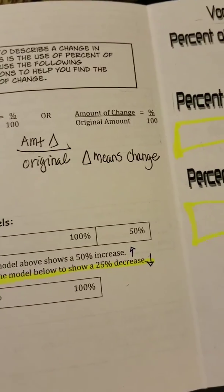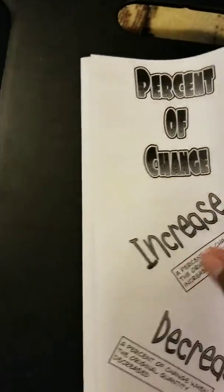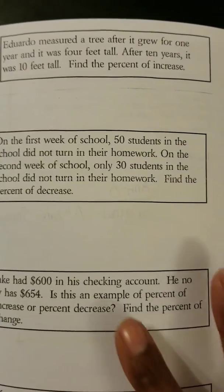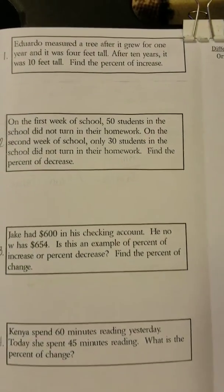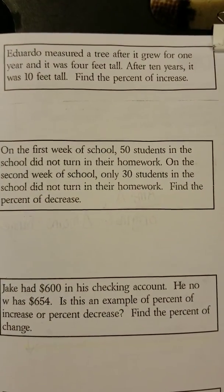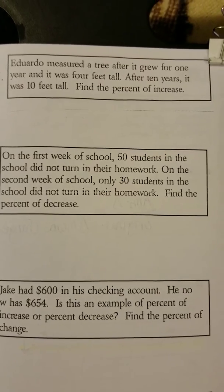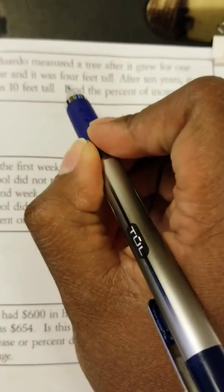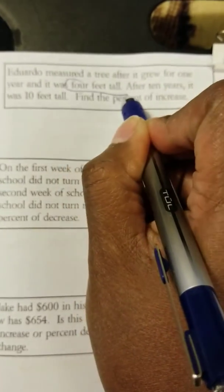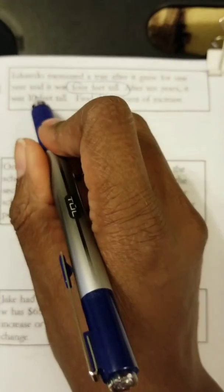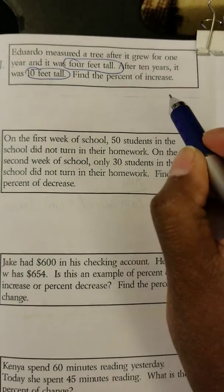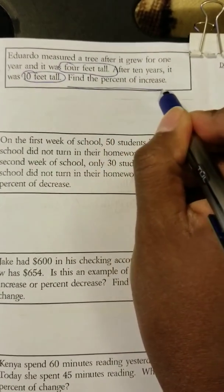Now we're going to turn over into our foldable and do some practice problems. Example number one says: Eduardo measured a tree after it grew for one year and it was four feet tall. Using our UPS strategy, we're going to circle four feet tall. After 10 years, it was 10 feet tall — so we're going to circle 10 feet tall. We're going to find the percent increase.